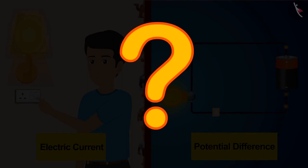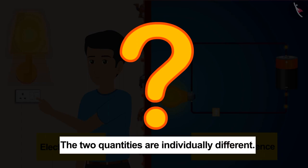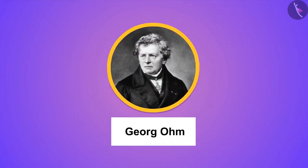The definition says that the two quantities are individually different. But a German physicist named Georg Ohm learned from his experiment that there is a relation between electric current and potential difference.